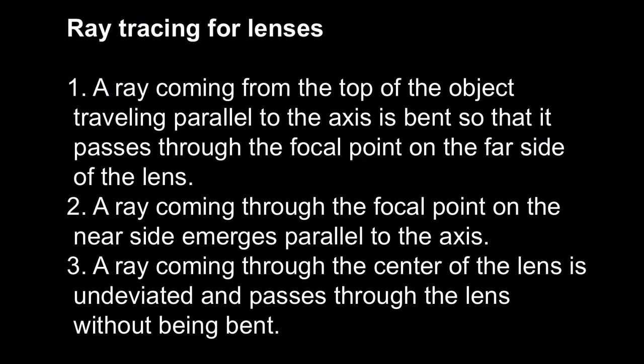In order to explain how a magnifying glass works, we need to use these rules for ray tracing for lenses. Rule one: a ray coming from the top of the object traveling parallel to the axis is bent so that it passes through the focal point on the far side of the lens. Rule two: a ray coming through the focal point on the near side emerges parallel to the axis. Rule three: a ray coming through the center of the lens is undeviated and passes through without being bent.